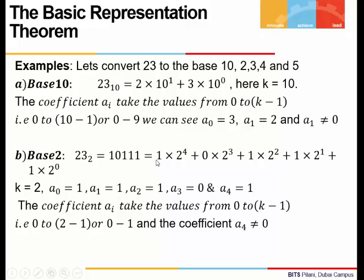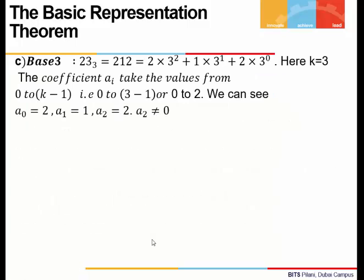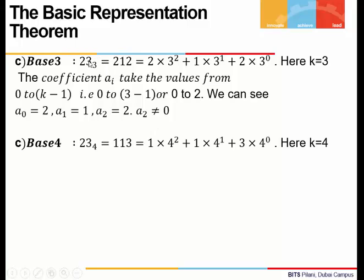If the leading coefficient becomes 0, the right-hand side would not give us our original number. For base 3, dividing 23 by 3 repeatedly gives remainders 2, 1, 2, which are written as a sum of powers of 3. Here a_0 is 2, a_1 is 1, and a_2 is 2. All coefficients lie from 0 to k minus 1, where k is 3, so values range from 0 to 2, and the coefficient of the highest power is 2, which is non-zero.